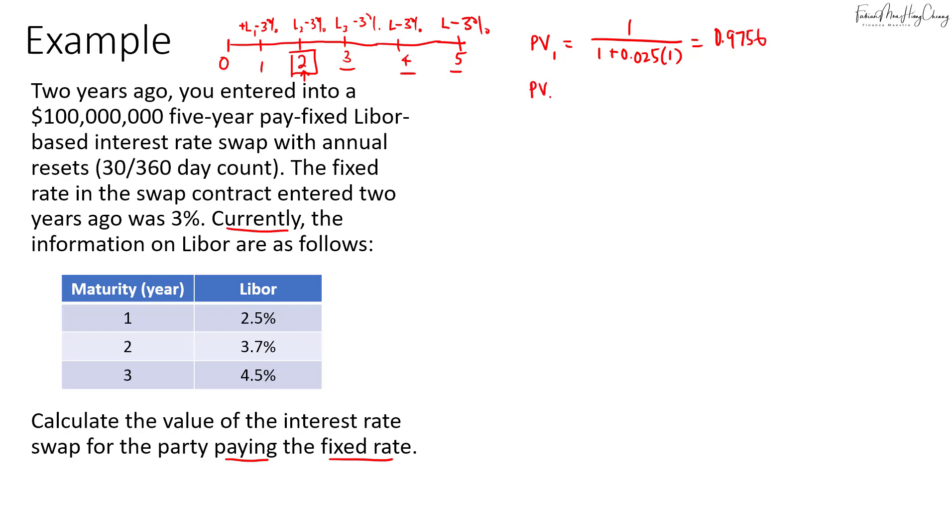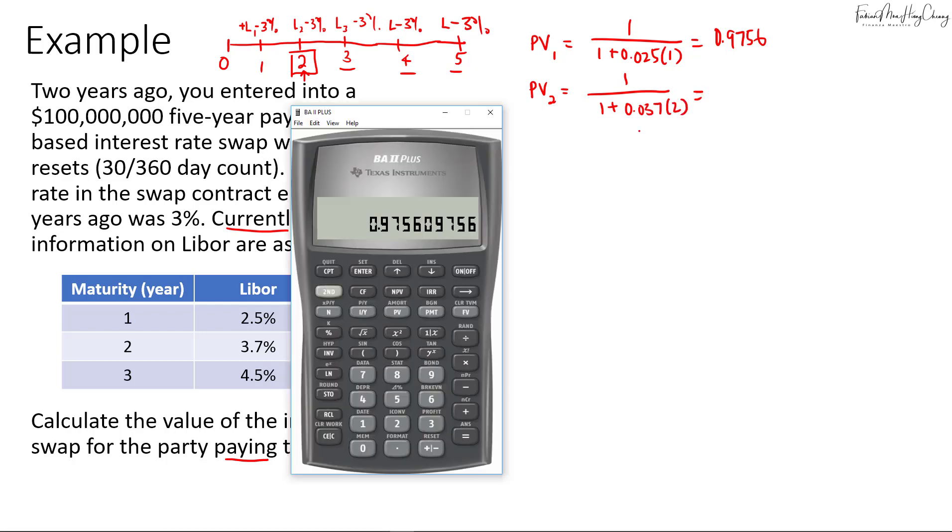And then for the PV of the two-year LIBOR that's 1 over 1 plus 3.7% times 2. That will be equals to 1 plus 0.037 times 2, and then we invert it. So that's 0.9311. So I'll save it in number 2.